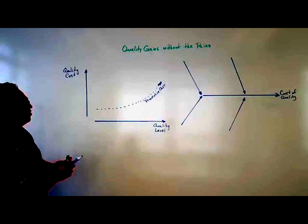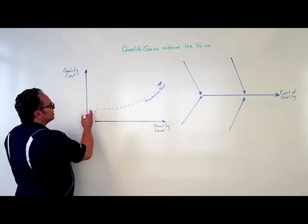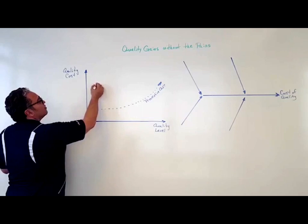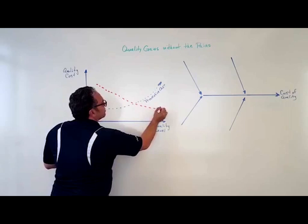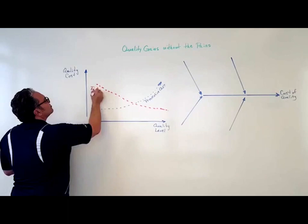And then what are the kind of costs we have? Well, we have failure costs. That means that the less we spend on prevention probably means we're spending more on rejection and the implications of rejection. Okay, so this is our failure cost.